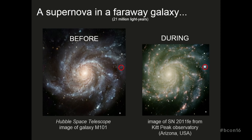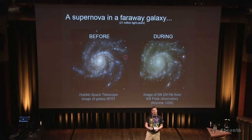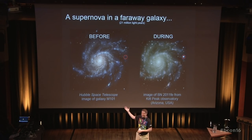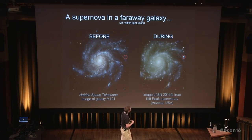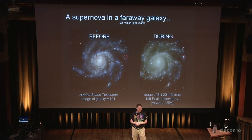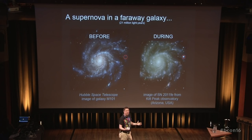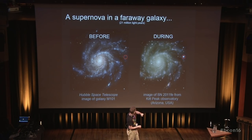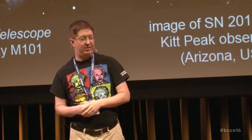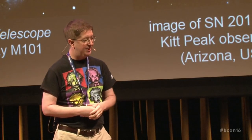Just to give you an example, the image on the left is a Hubble Space Telescope image of a nearby galaxy — nearby for galaxies means about 20 million light years away, so we're actually seeing this galaxy as it was 21 million years ago. On the right is an image taken in 2011 while supernova 2011FE appeared in this galaxy. We now know this was a massive star that had ended its life. I like to show this image because it was taken from Kitt Peak Observatory in Arizona — a close personal connection to my home state.